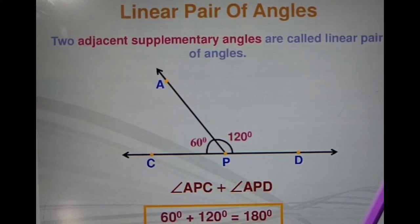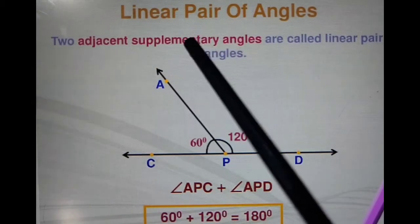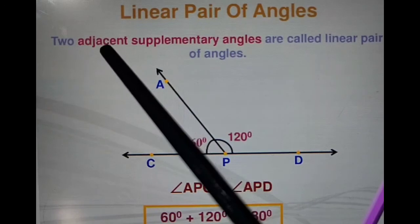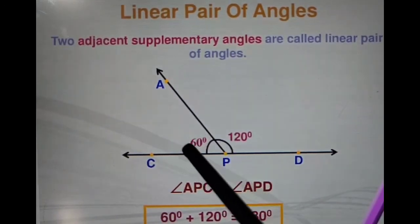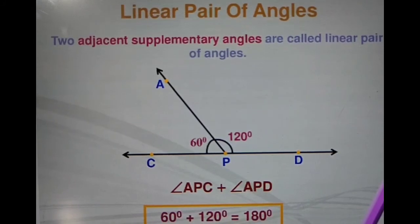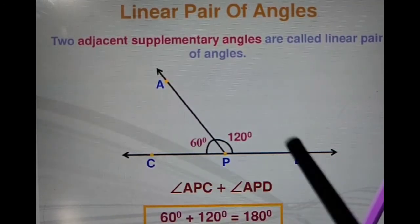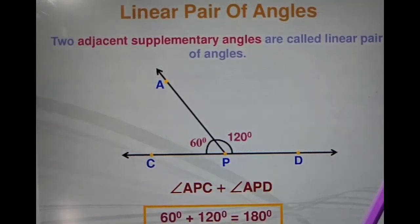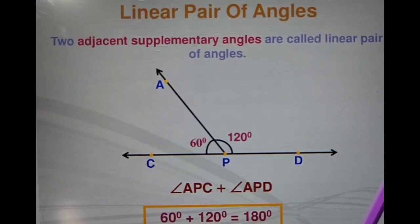Now students, understand the basic difference between the supplementary angle and the linear pair of angles. Two adjacent supplementary angles — supplementary means the angles whose sum is 180 degrees, but they must also be adjacent, meaning there is a common arm between the two angles. When both the properties of adjacent angles and supplementary come together, that is called the linear pair of angles — angles on the same line where the rays are opposite to each other, with a common arm, and their total sum is 180 degrees.